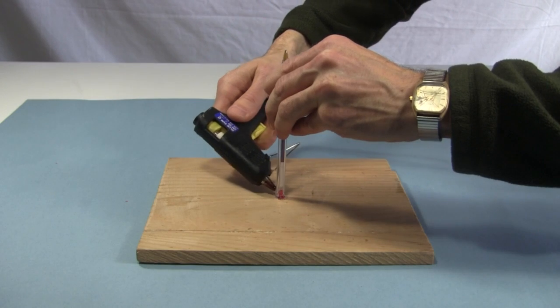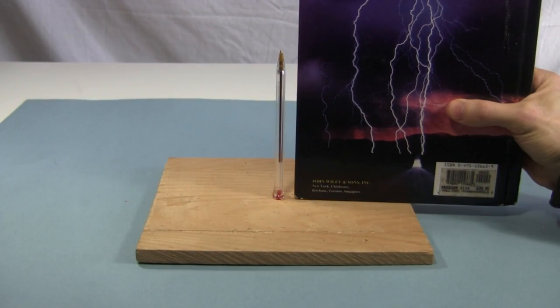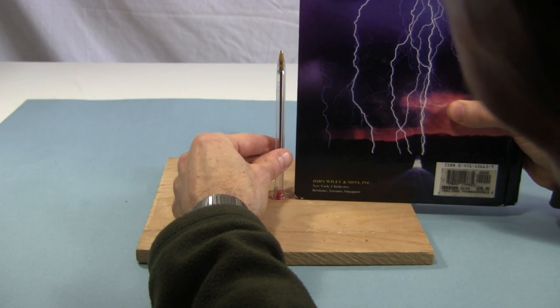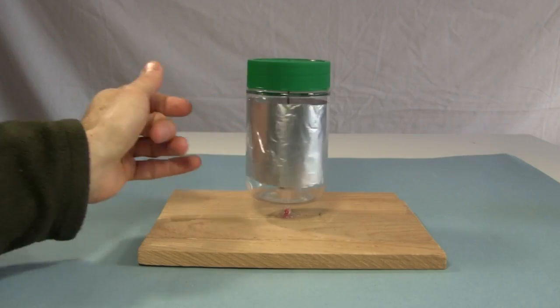I then hot glue the pen to the middle of the piece of wood. It should be standing up straight with respect to the wood. A book makes a nice tool for checking this. And that's the finished rotor, or rotating part. It should spin easily.